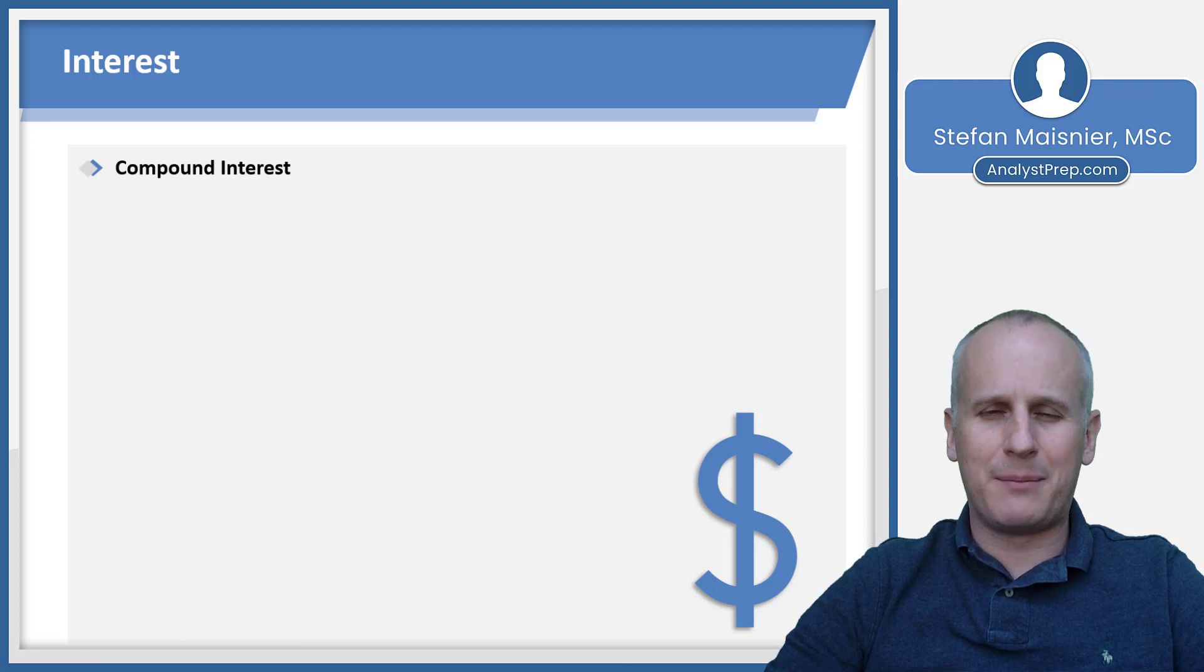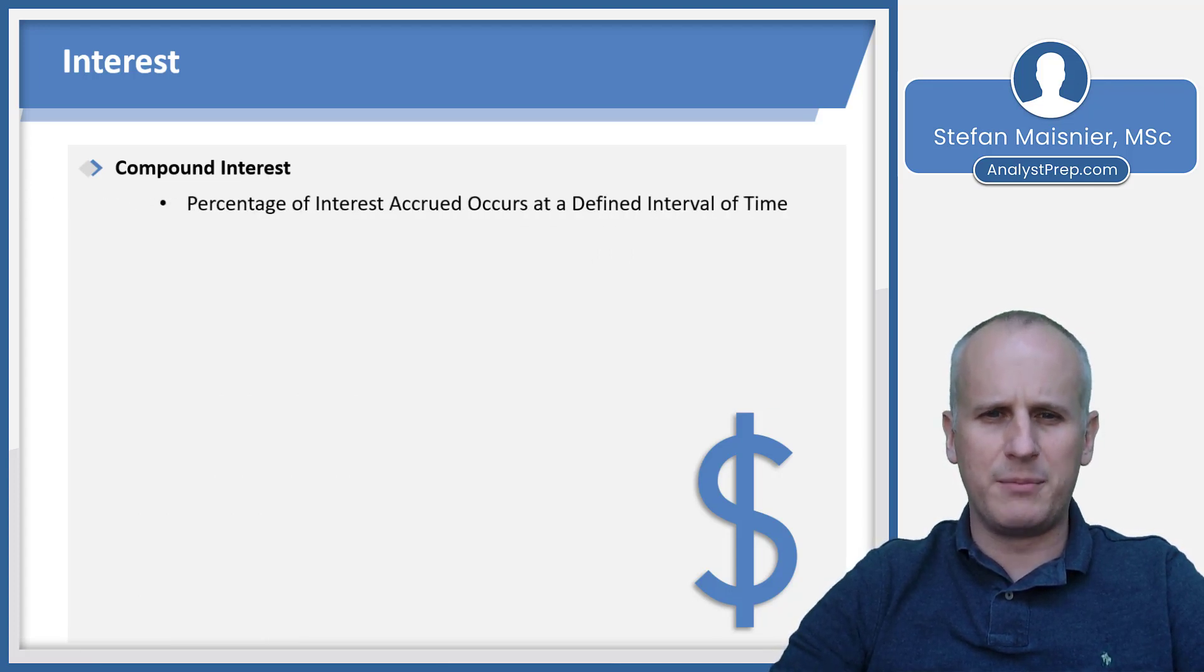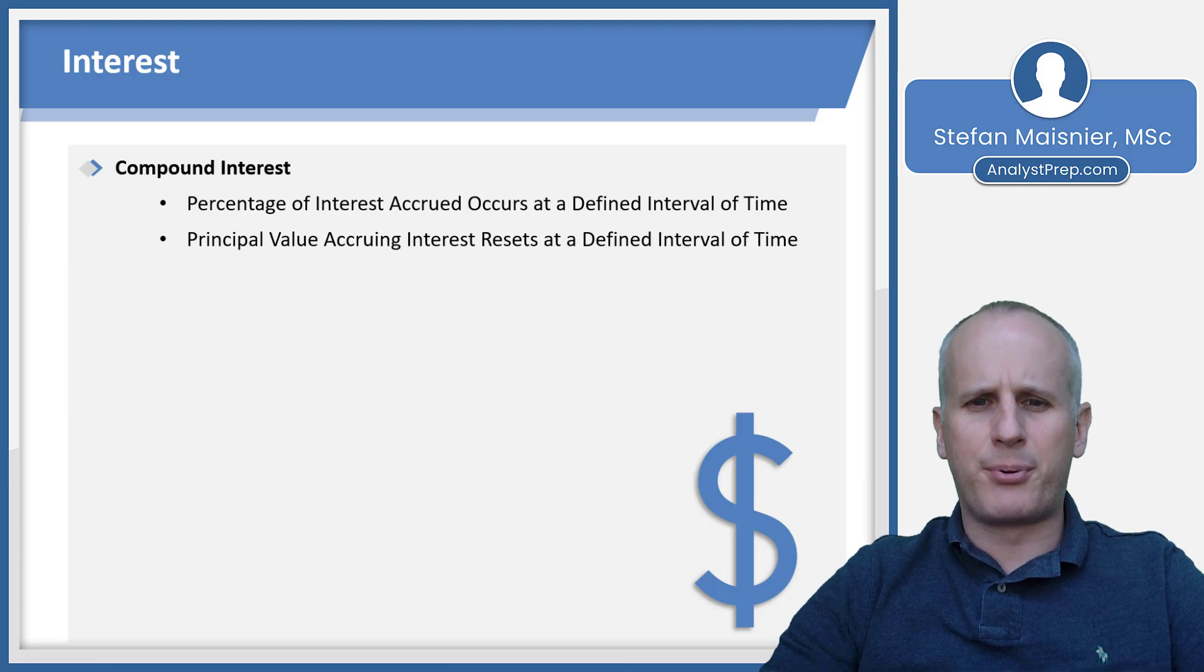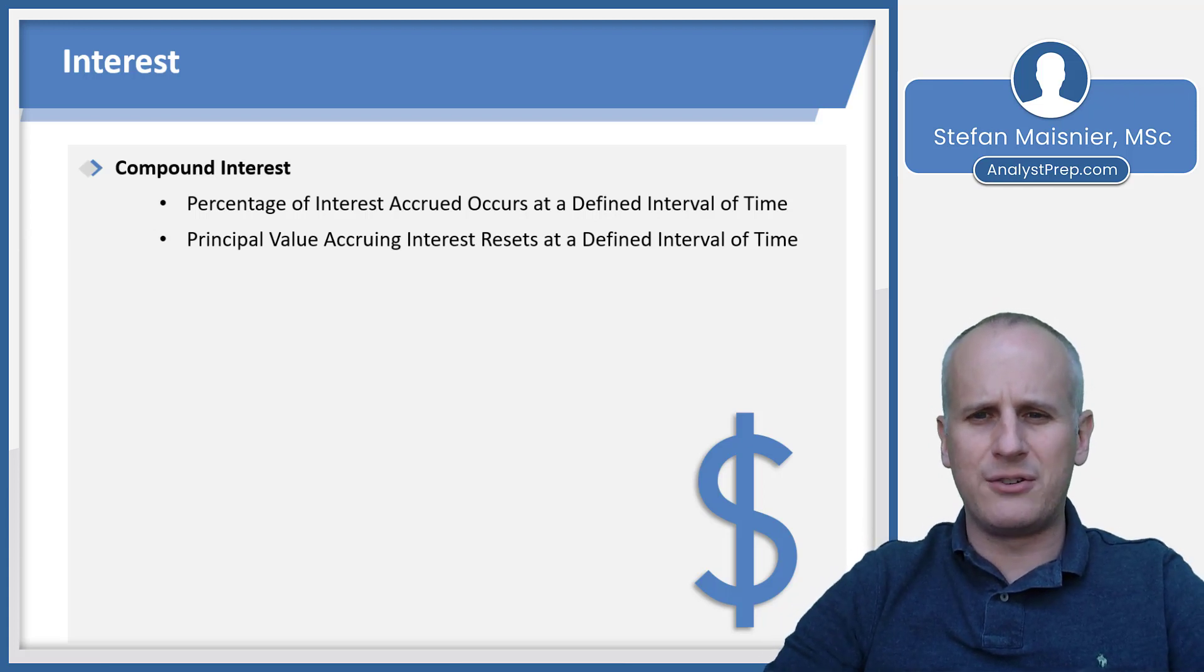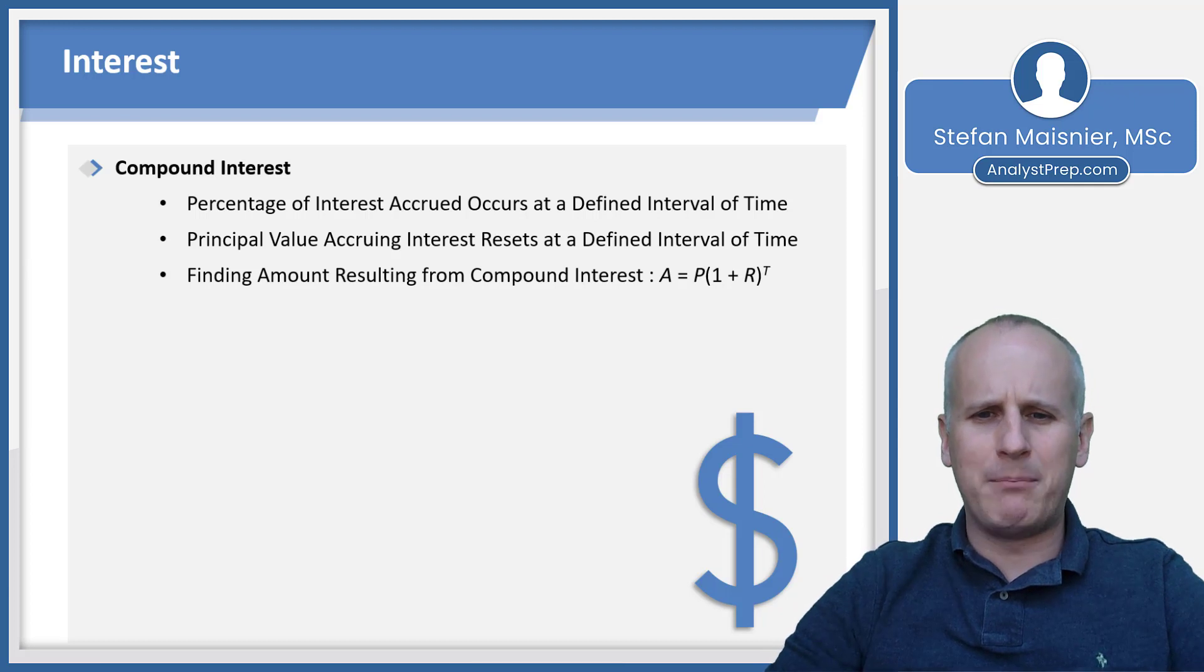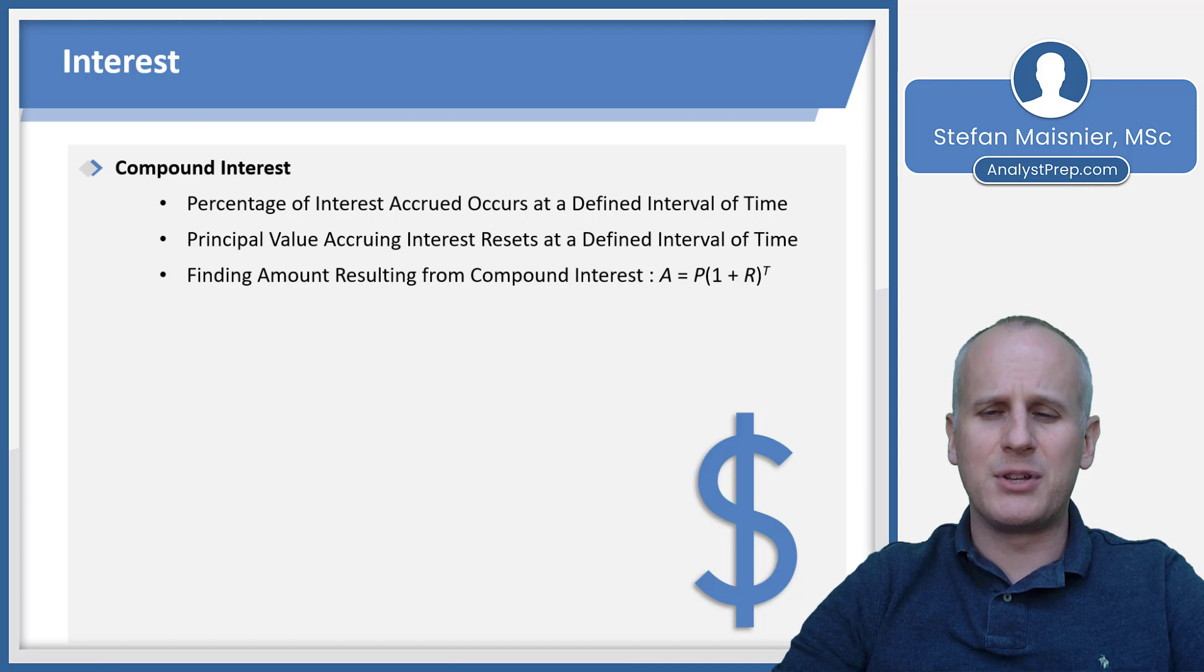Now, it gets a little bit more complex when you have what is known as compounding interest. It's going to be the percentage of interest that accrues over a defined interval of time. But this time, your principal value that is accruing interest will reset at a defined interval. Finding that amount resulting from the compound interest is going to be a slightly different and more complex formula. We've got A equals P times the quantity 1 plus R, but this time that's raised to the T power.